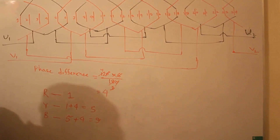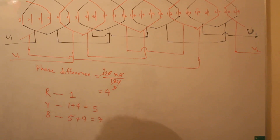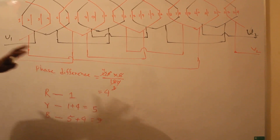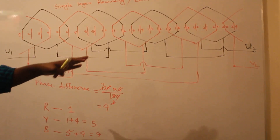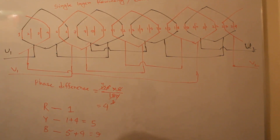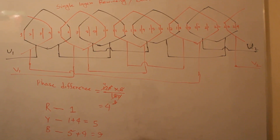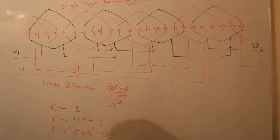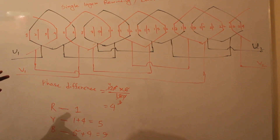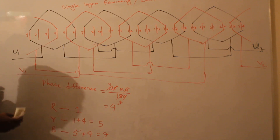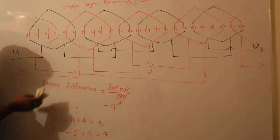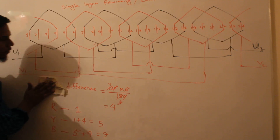So now we get here 4 terminals: U1, U2, V1, and V2. Now the complete coil, 2-coil set is done, and we start now the third — the B-phase coil.